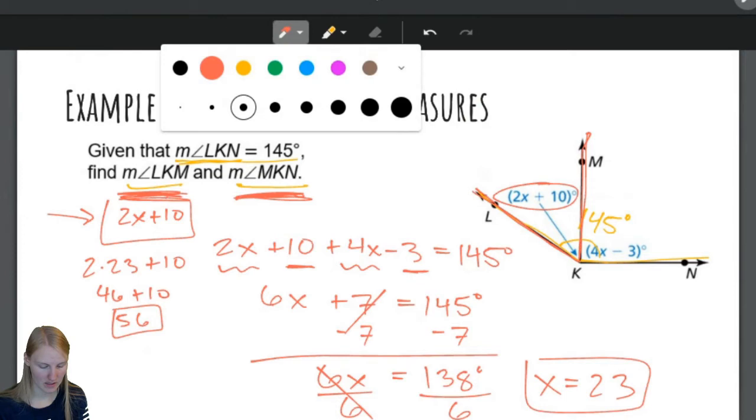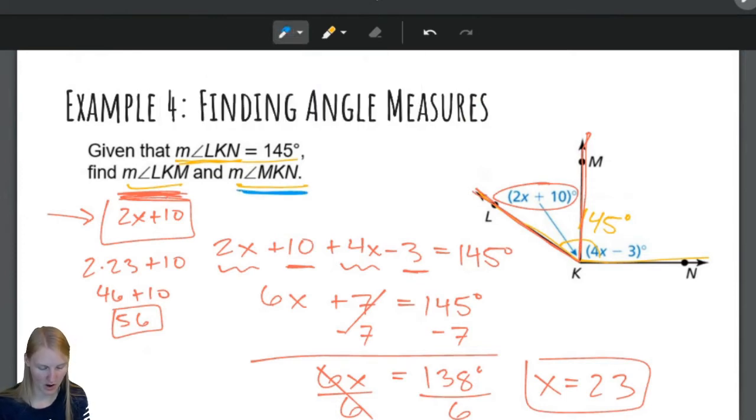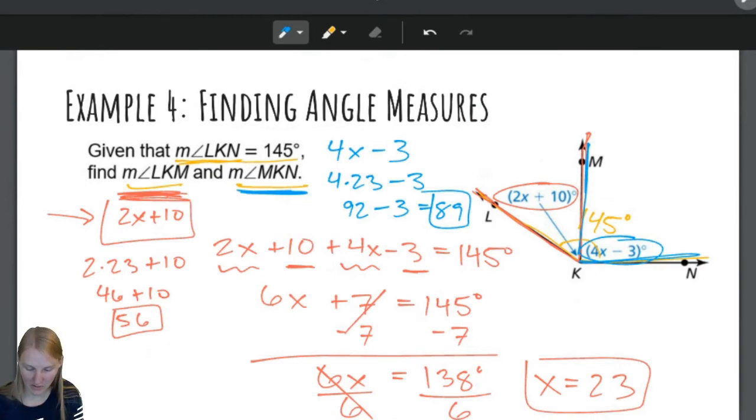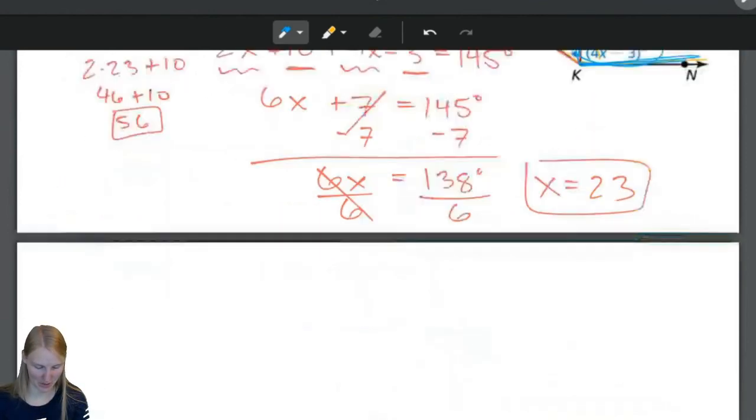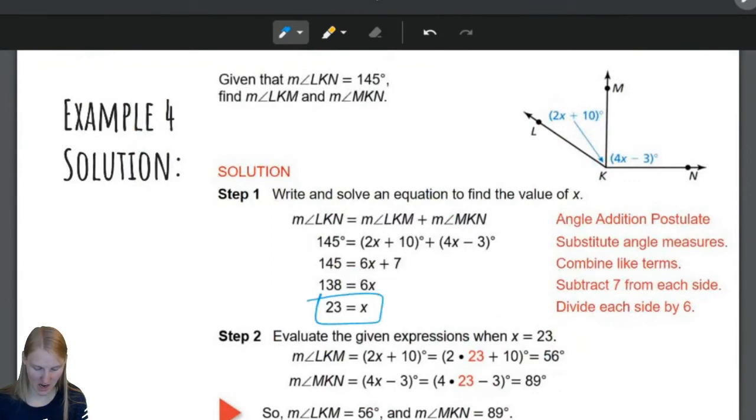Beautiful. We found LKM, but now let's switch colors and let's look at the measure of MKN. So, MKN is here, and that is 4x minus 3. So, let's plug the x back into it. And we have 4 times 23 minus 3. 4 times 23 is 92 minus 3, which is 89. 89. That is really close to a right angle. And, if I look at this blue angle right here, this looks like it's almost 90 degrees. So, 89 makes perfect sense. Ta-da! Beautiful. We can check and make sure that we were right. Solve for x is 23 and plug it back in, and we get 56 and 89. Boom. You were right.